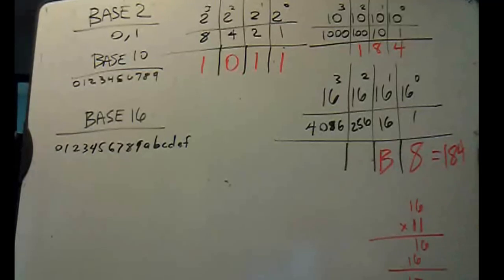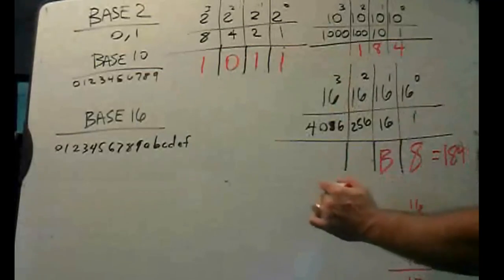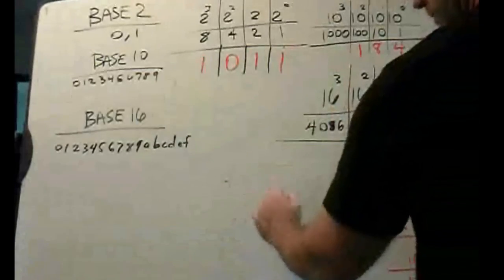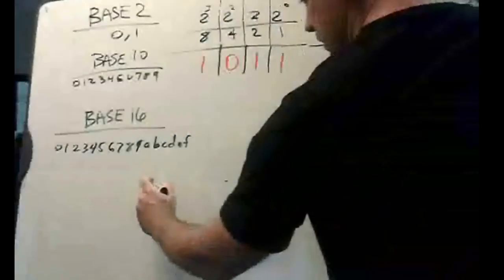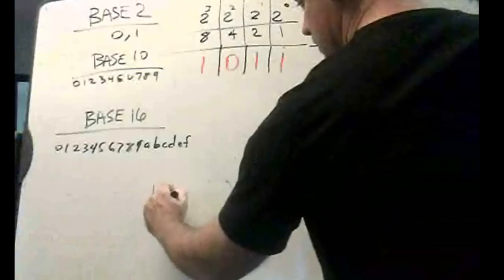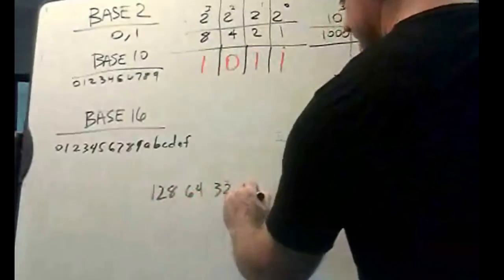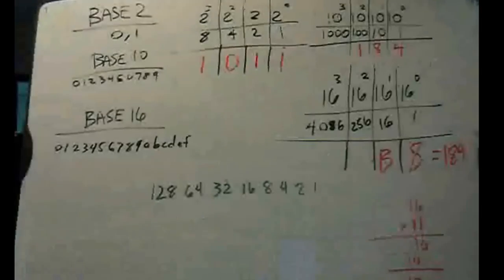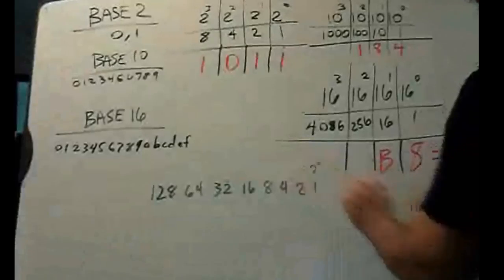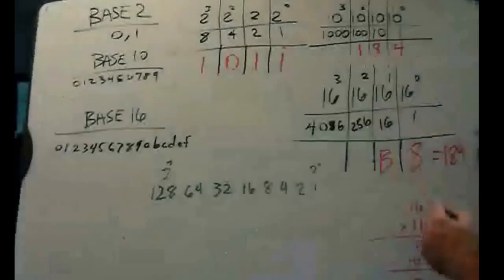Now, if I wanted to write that in binary, I need to have my place values go a little farther. So, my place values in binary are 128, 64, 32, 16, 8, 4, 2, and 1. Those are the place values, with this being 2 to the 0 in the 1's place, and this being 2 to the 7th in the 128's place.